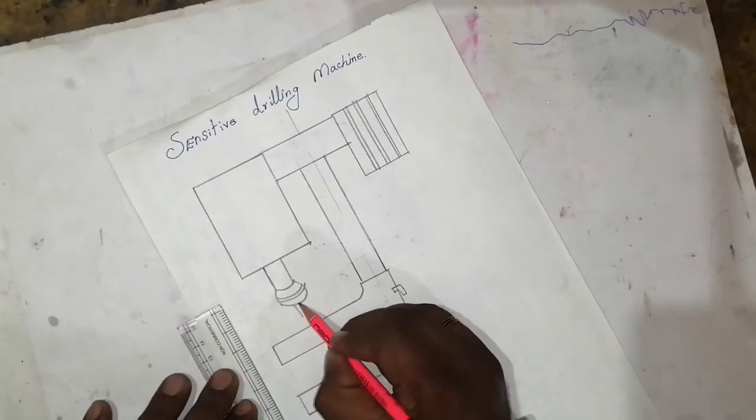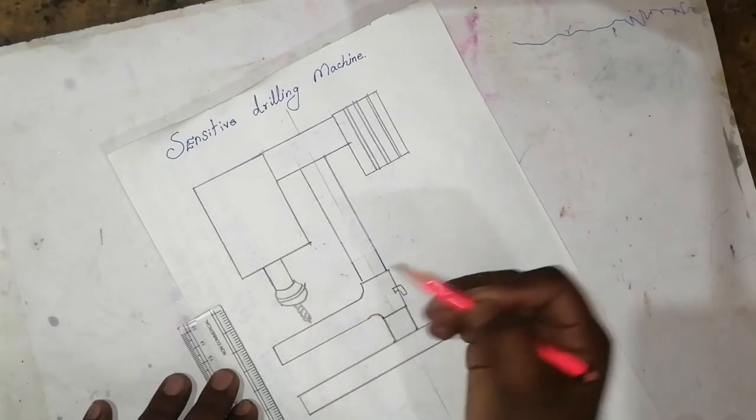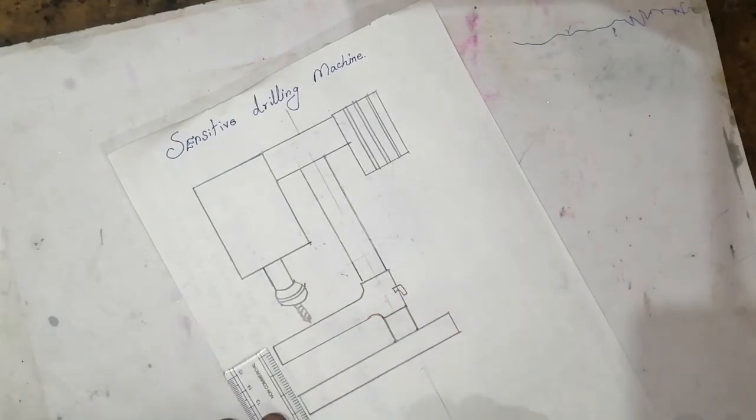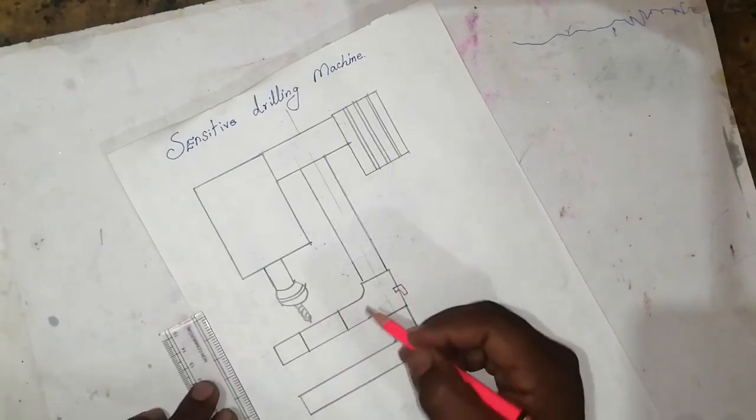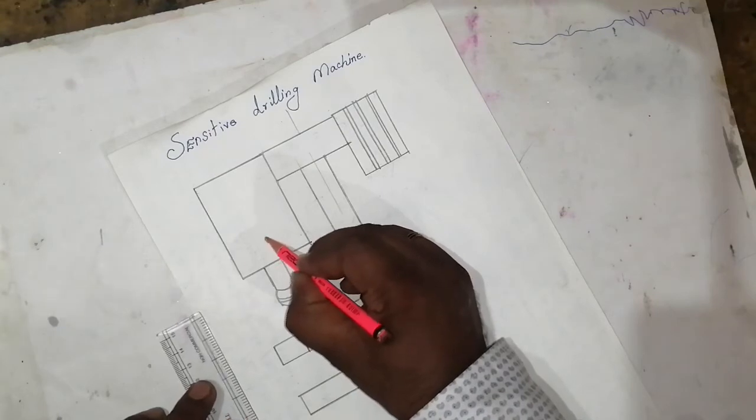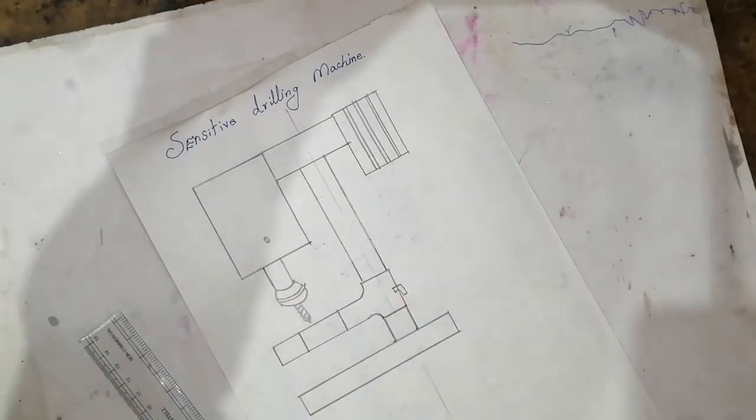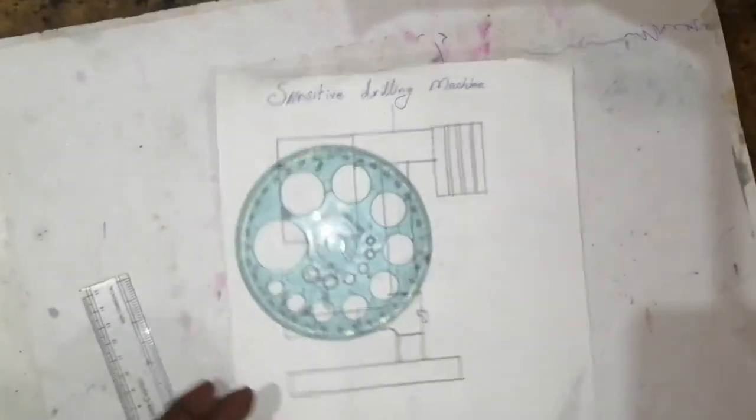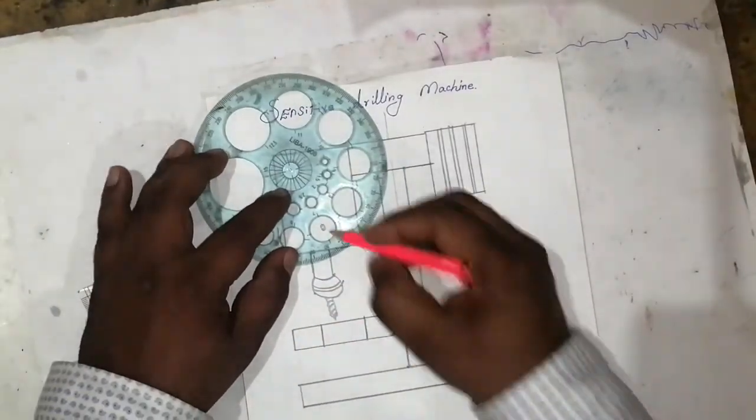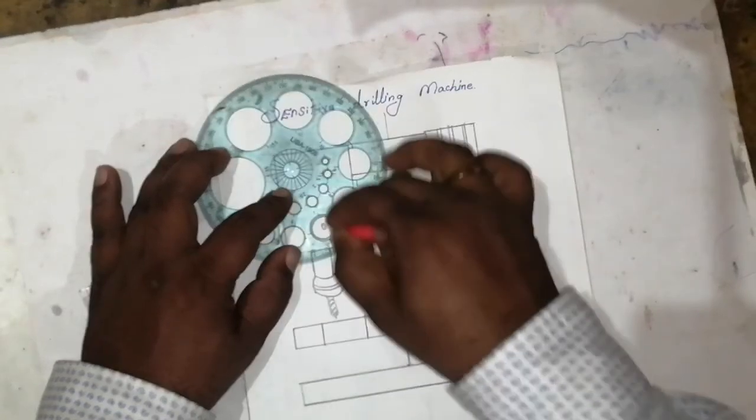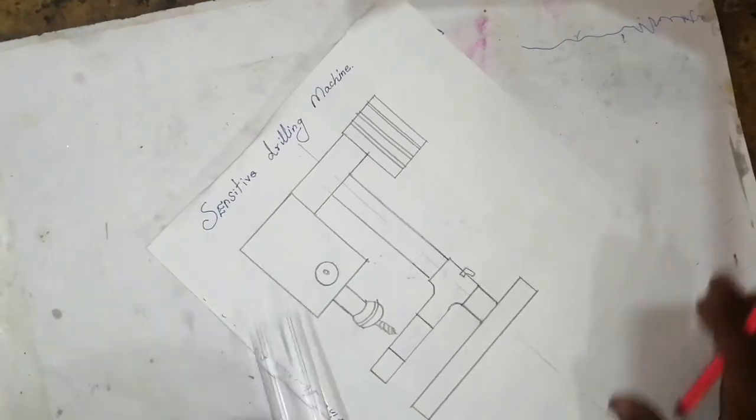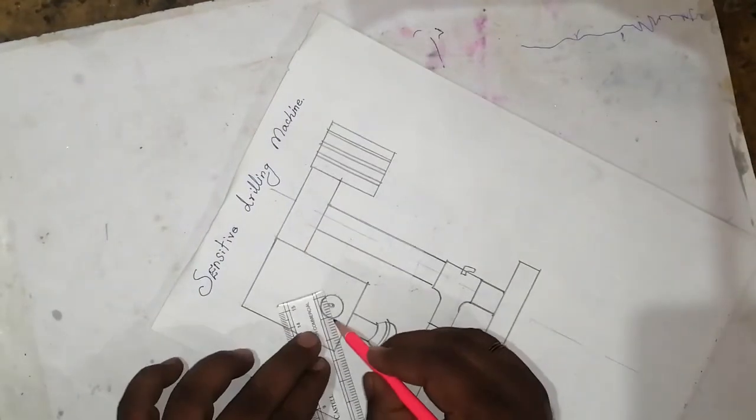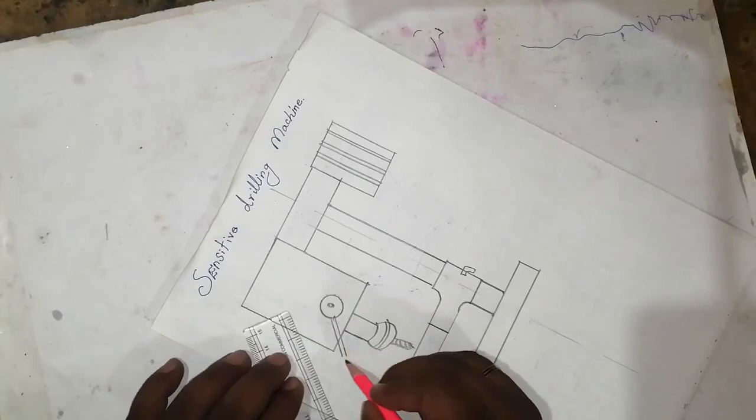So the drill bit will come like this. Okay, this is the piece, this is the table. Yeah, the handle will come. So you can take a below circle and one rotate, then the handle will come like this to room.